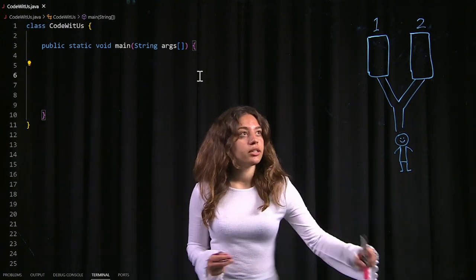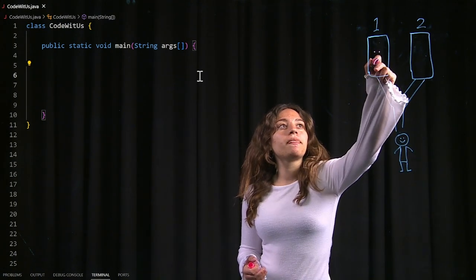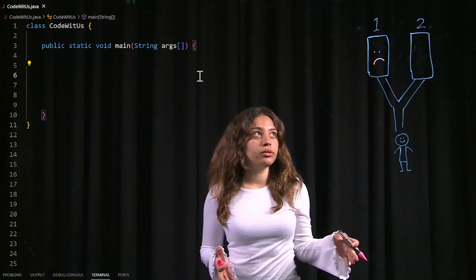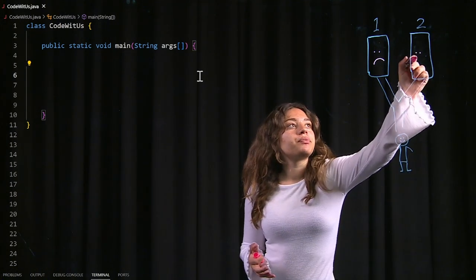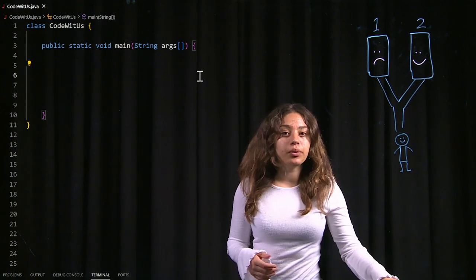So over here, I have this visualized. Let's say the first door is a losing door. If we pick that door, we lose. The second door, you guessed it, is a winning door. If we pick that door, we win the game.